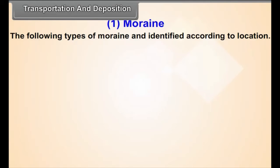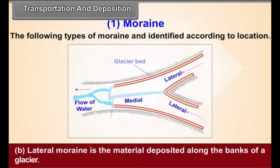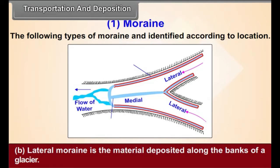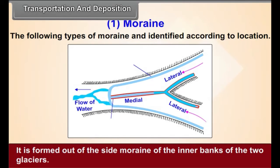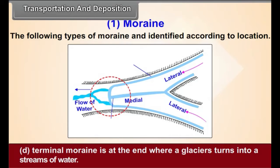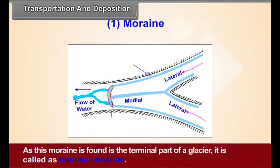Moraine: The following types of moraine are identified according to the location. Ground moraine is the material deposited at the base of the glacier. Lateral moraine is the material deposited along the banks of a glacier. Medial moraine is found in the central part of the glacier after the confluence of two glaciers; it is formed out of the side moraine of the inner banks of the two glaciers. Terminal moraine is at the end where a glacier turns into a stream of water. The water flow cannot carry the material brought by the glaciers, hence the moraine is found in a huge quantity at this location. It is called terminal moraine.